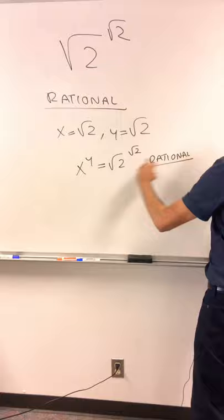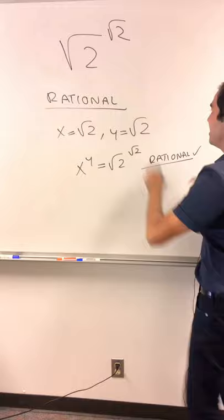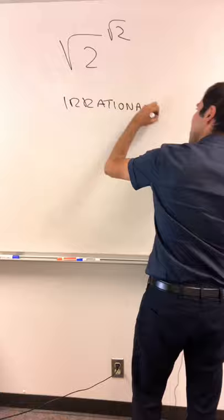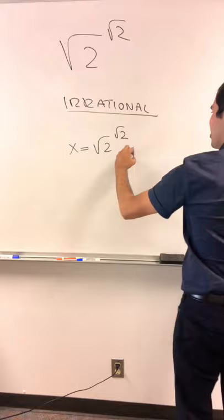Even if it's irrational, it would also be done, because if it's irrational, then let x be square root of 2 to the square root of 2, which is assumed to be irrational, y be square root of 2, which is irrational.